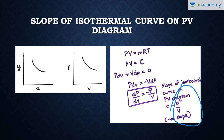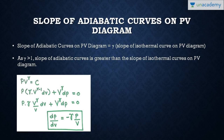Similarly, for the slope of the adiabatic curve on a PV diagram, we start with the adiabatic equation: PV^γ = constant. Taking the derivative of both sides: P·γ·V^(γ−1)·dV + V^γ·dP = 0, which simplifies to P·γ·(V^γ/V)·dV + V^γ·dP = 0. Solving for dP/dV gives us dP/dV = −γ·P/V. Since γ is generally greater than 1, the slope of the adiabatic curve is greater than the slope of the isothermal curve.